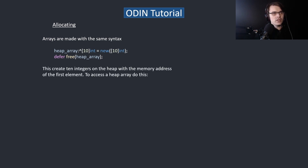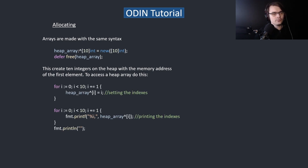This creates 10 integers on the heap with the memory address of the first element. To access a heap array you use the pointer followed by square brackets to access the index. First we set it and then we access it later.